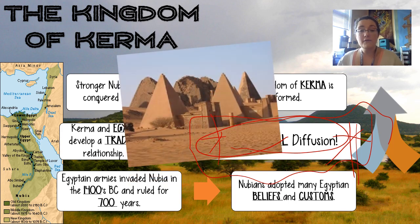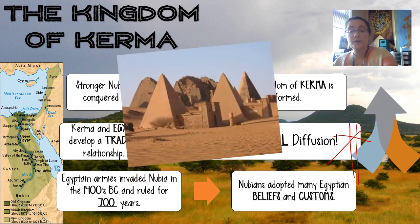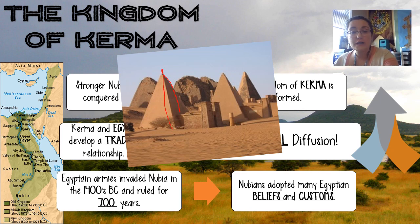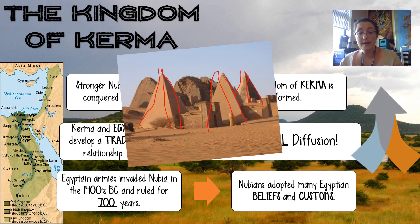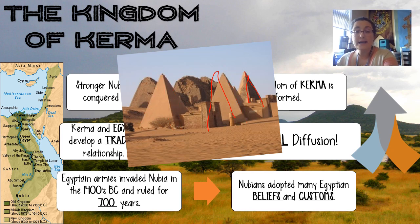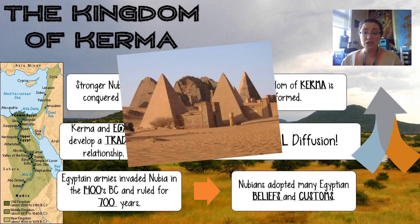They even started building pyramids. You'll notice these pyramids are tall and skinny — they are different than the Egyptian pyramids — but we can still see that Egyptian influence. The trend or idea takes on a life of its own when it comes to Nubia; the Nubians changed it just a little bit, but the base idea is the same.